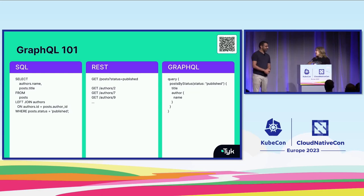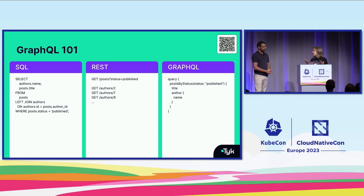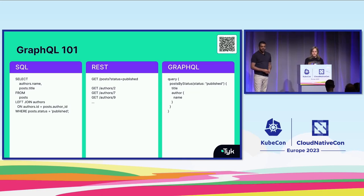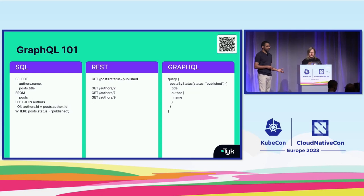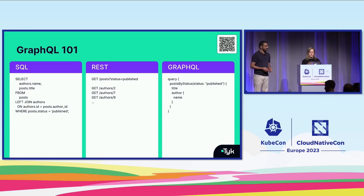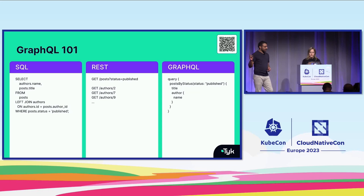Why do we need GraphQL? What problem does it solve — isn't REST good enough? SQL, REST, and GraphQL are all roughly equivalent in this example. We need to get all the posts which have been published and find out the author's name to populate the front end for a new blog page. We just need two properties from authors — ID and name — and three properties from posts: title, author ID, and status.